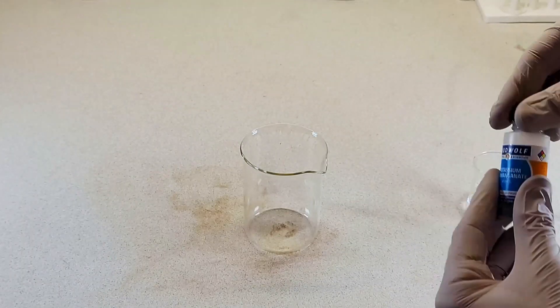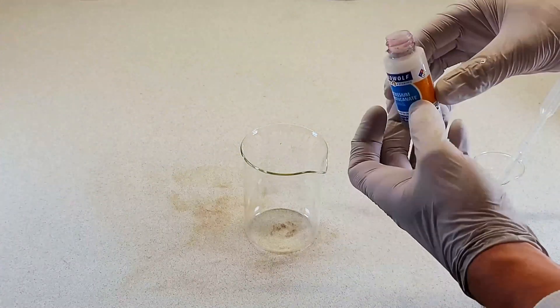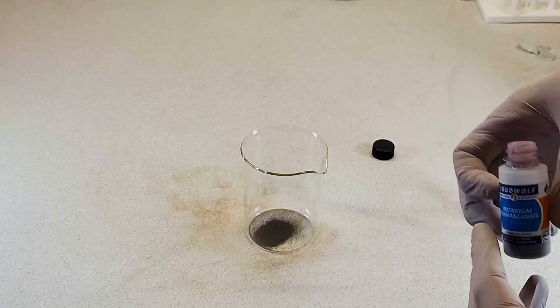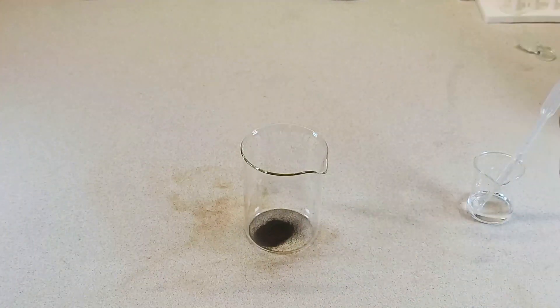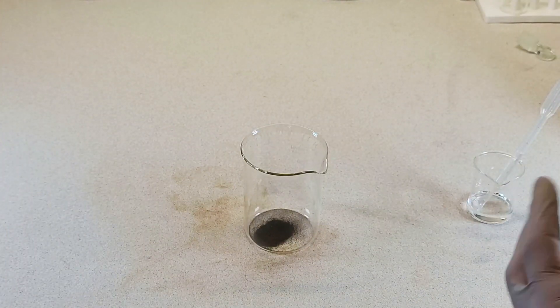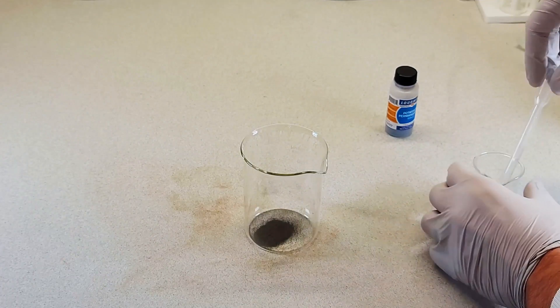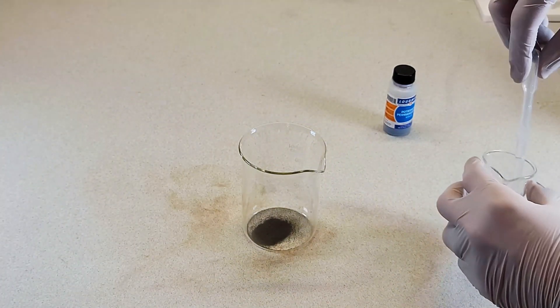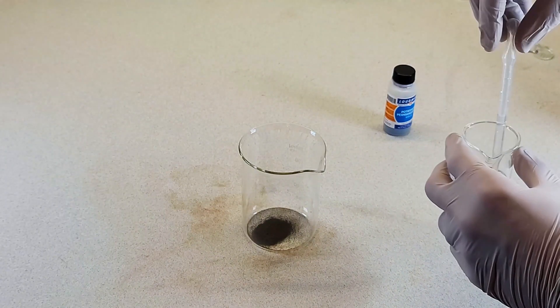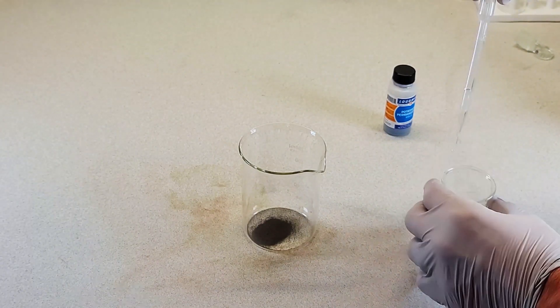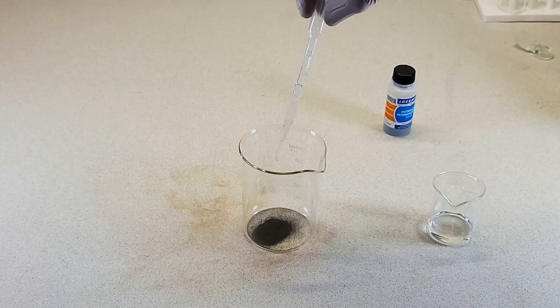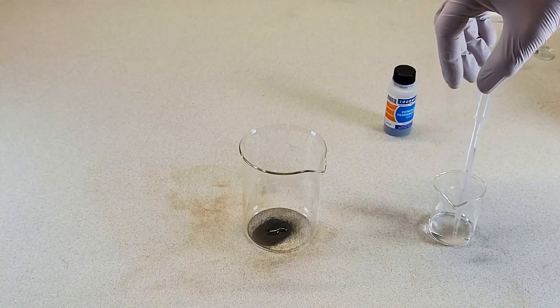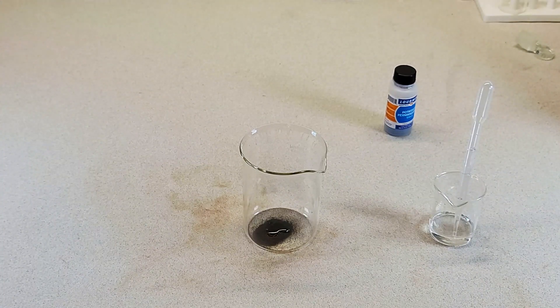So for this reaction, once again we take our potassium permanganate, and we'll just make a little pile down there. Now in this beaker I've added some of the vegetable glycerin that I had mentioned. And it really is as simple as adding a little bit on top. We'll just wait for a second.